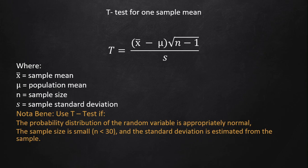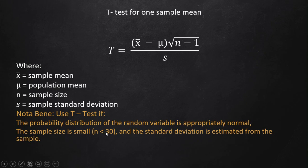Just a recap — we use the t-test when the probability distribution of the random variable is approximately normal, the sample size is less than 30 (small sample), and the standard deviation comes from the sample, not from the population.